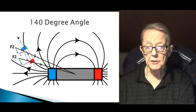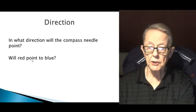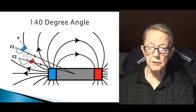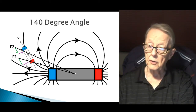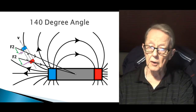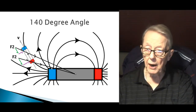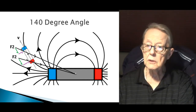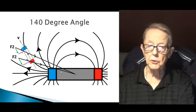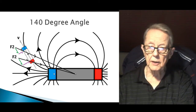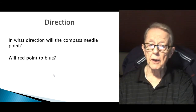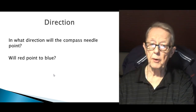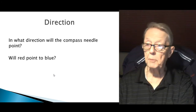In any case, if the needle is going to take this position, these two forces have to be equal. When I do a future analysis, that will tell me something about G1 distribution and the G2 mass. So that's the position the needle takes, based on the G2 force field. Now — in what direction will the compass needle point? Will red point to blue, or will red point to red?